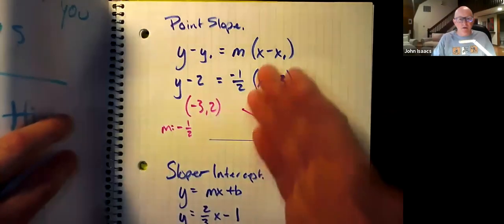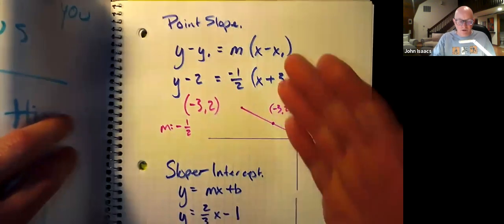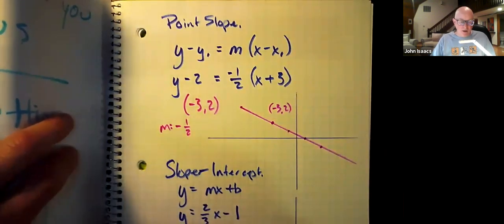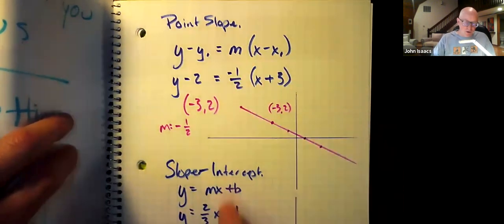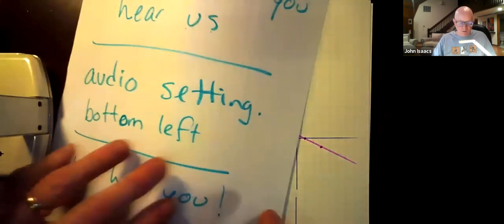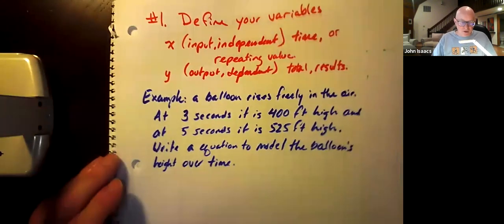Okay, so we're back. We just talked about in the last video point-slope form and slope-intercept form and graphing from those where we have a point and a slope or where we just have a starting value and a slope, a y-intercept and a slope. Now we're going to talk about some word problems, how these go with this.